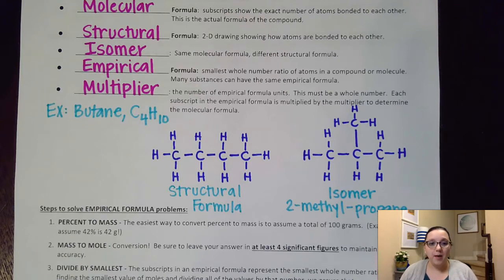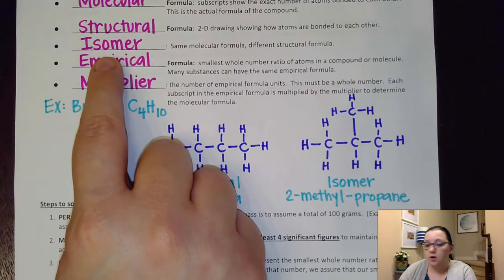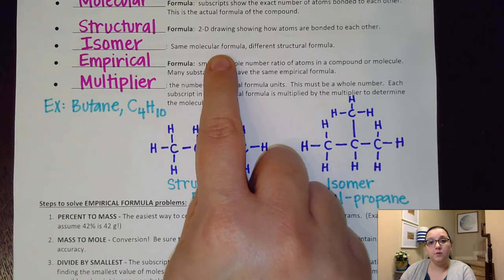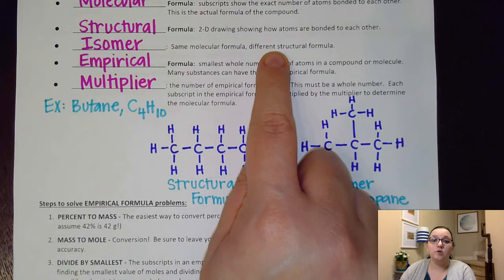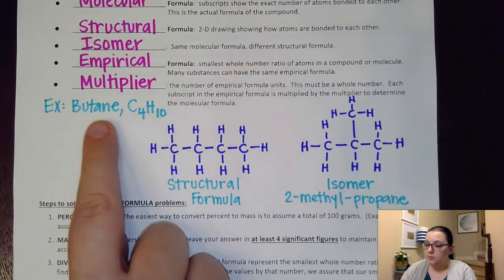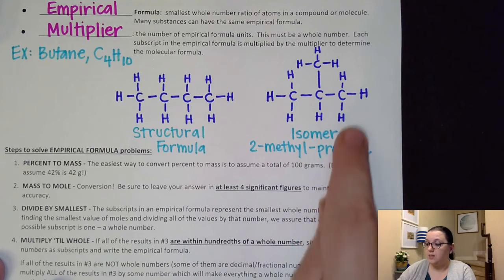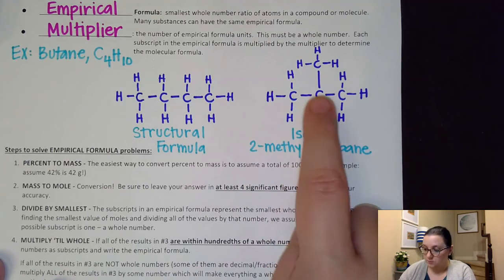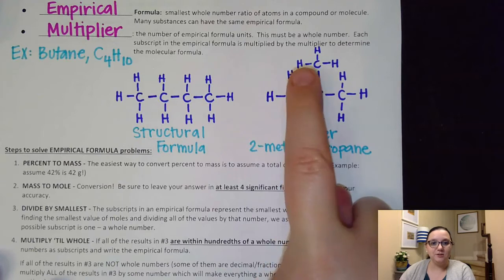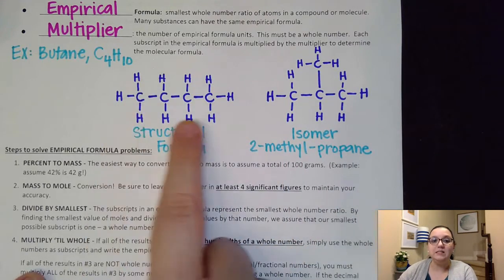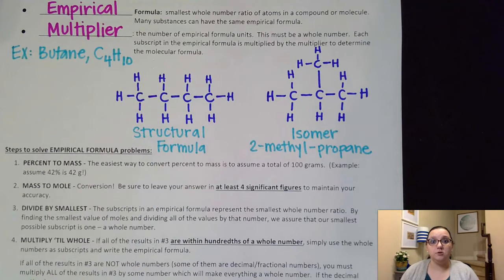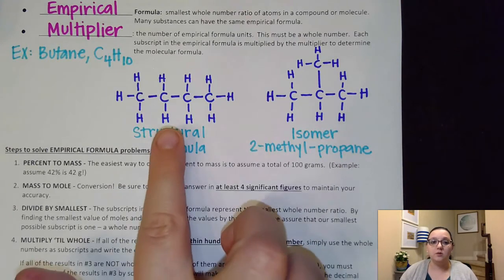However, there are other compounds that have a formula of C4H10. Isomers are when we have the same molecular formula, but they're arranged differently. We have a different structural formula. So for example, butane has an isomer called 2-methylpropane that looks like this. It too is C4. There's the four carbons with the 10 hydrogens around it. But you can see it's organized very differently than regular straight chain butane. That gives it some different properties like this isomer has different melting points and boiling points than the regular butane would have.